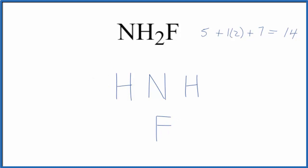Next we'll put electrons between atoms to form chemical bonds. So these pairs of electrons, we'll put them between to form a chemical bond. And we've used six valence electrons, we have 14.